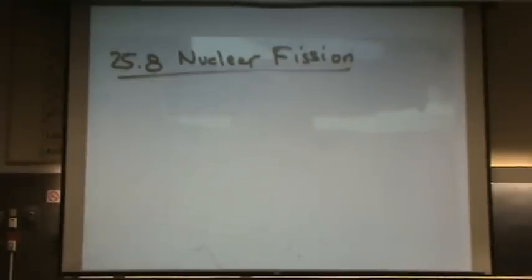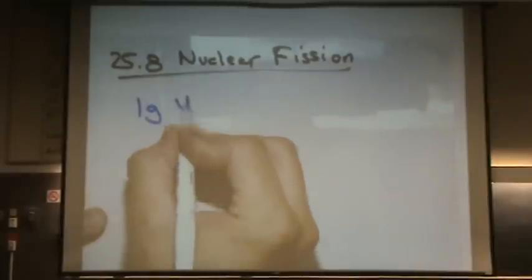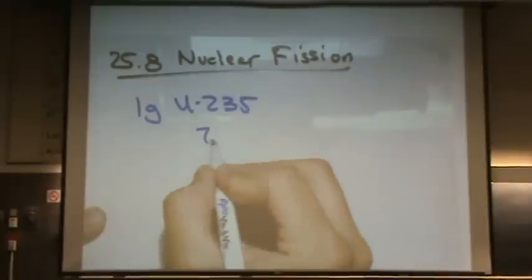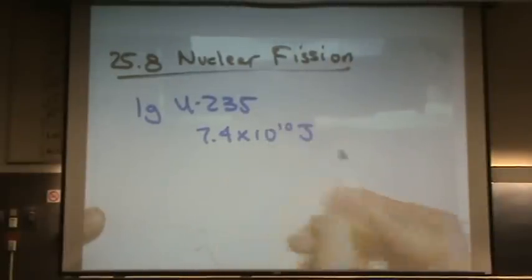That energy that's given off, we can use to power, and it can be very useful power wise. So for example, one gram of uranium 235 can produce 7.4 times 10 to the 10 joules.